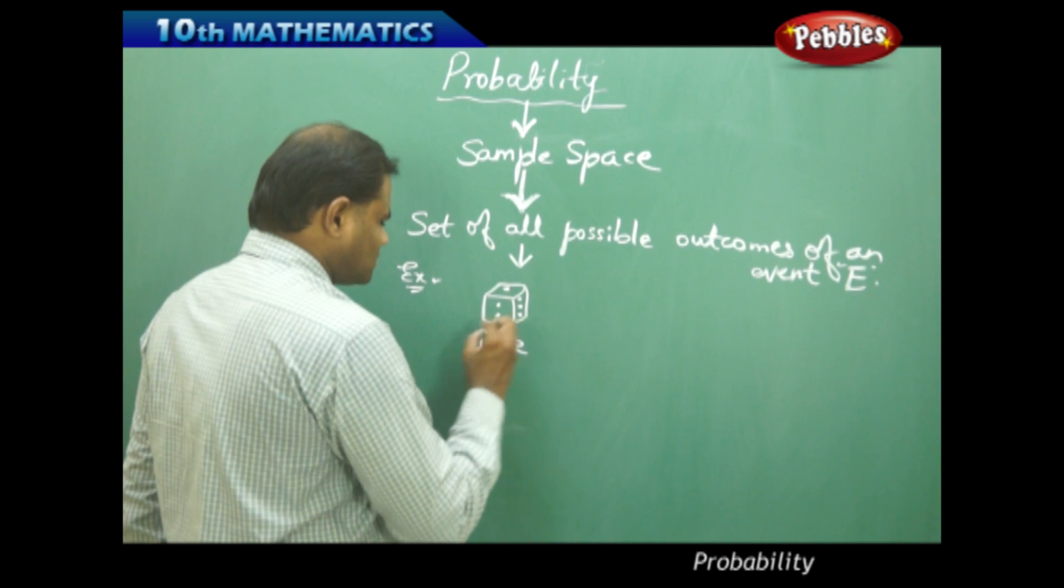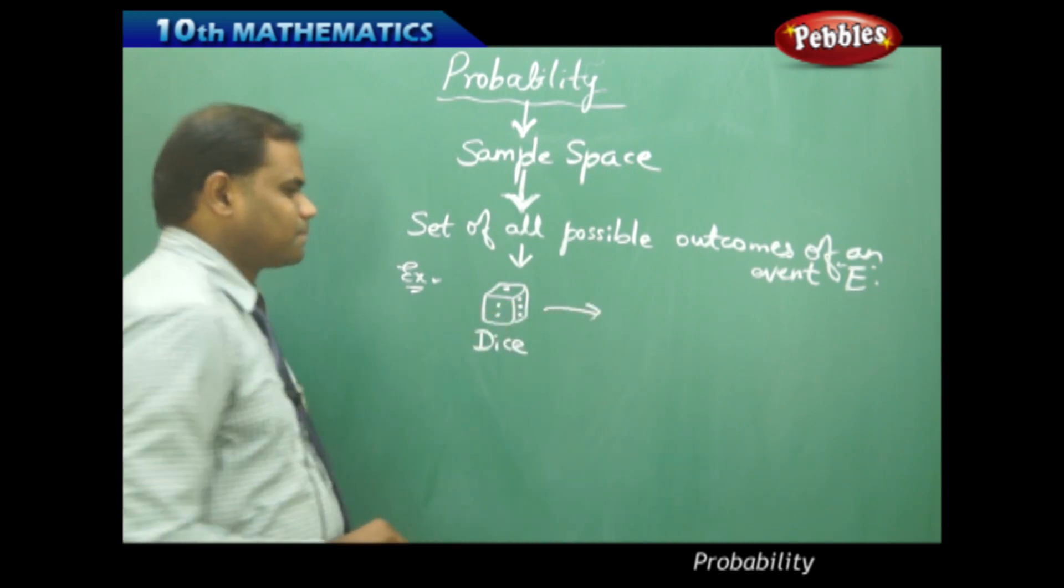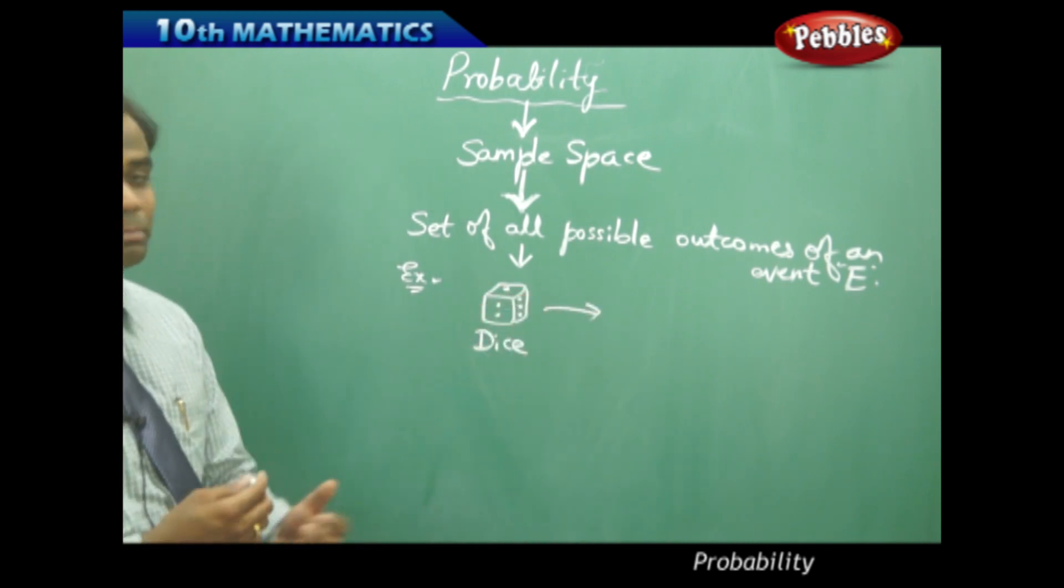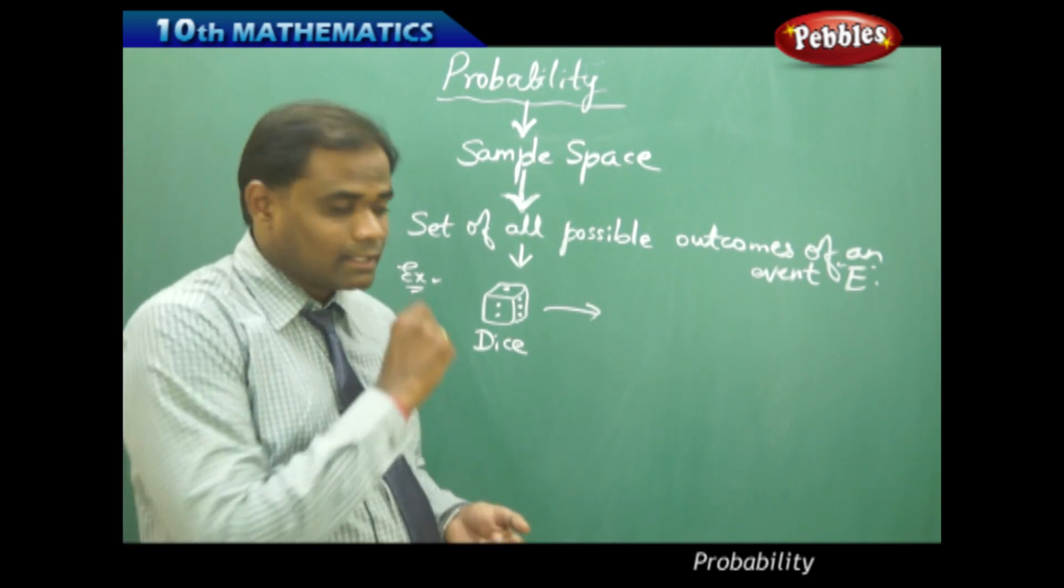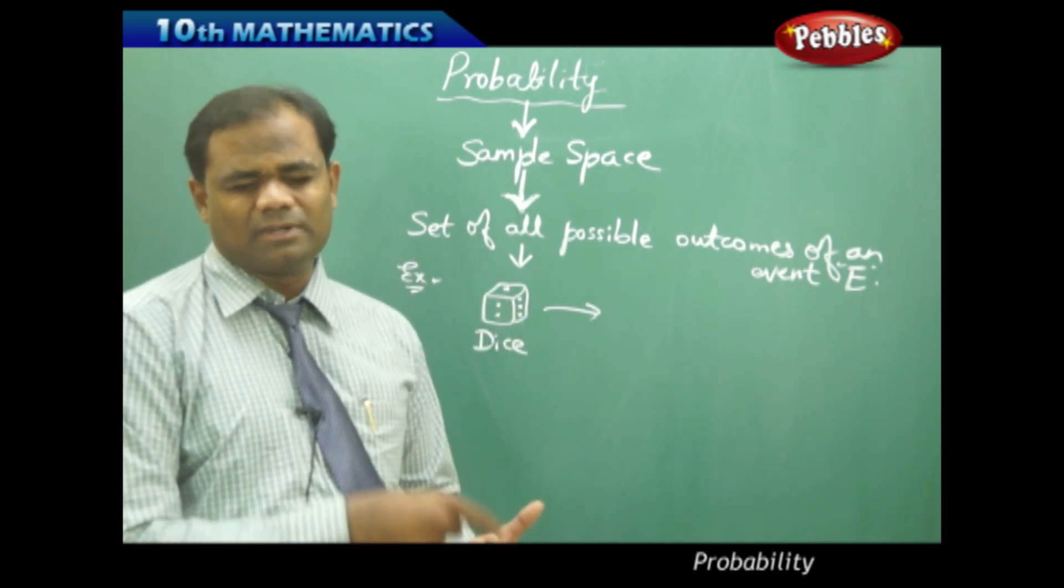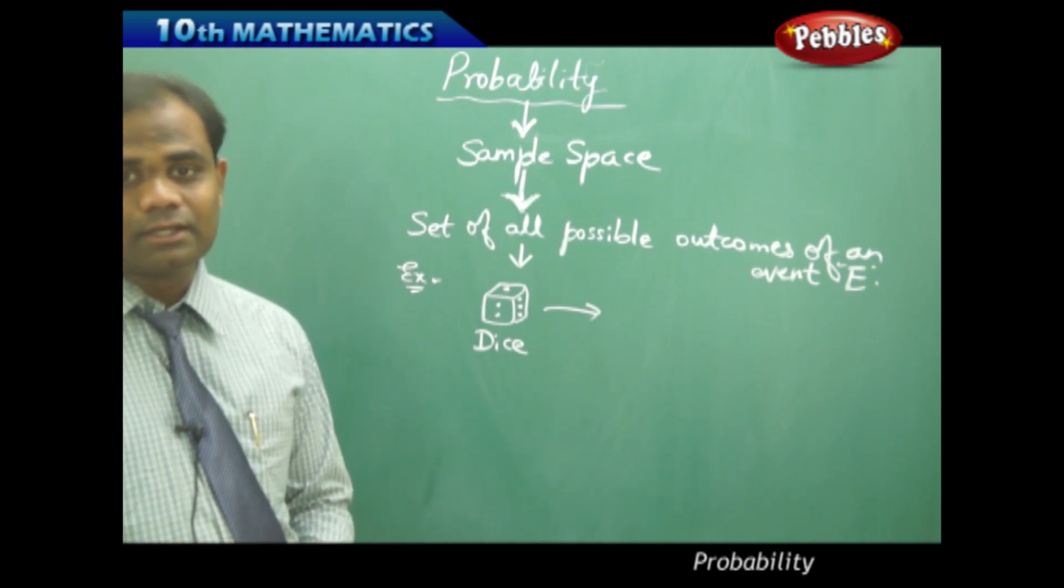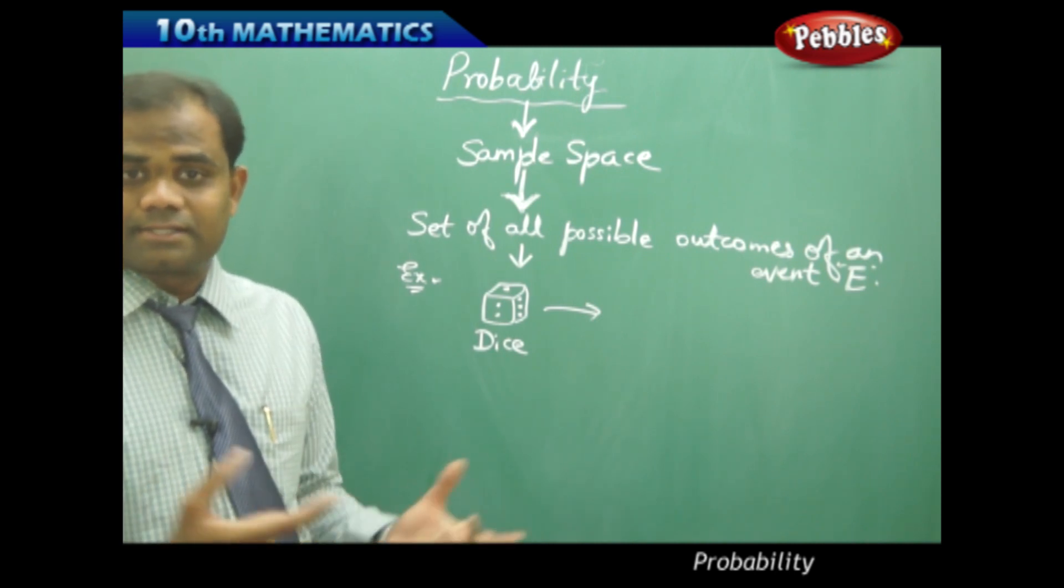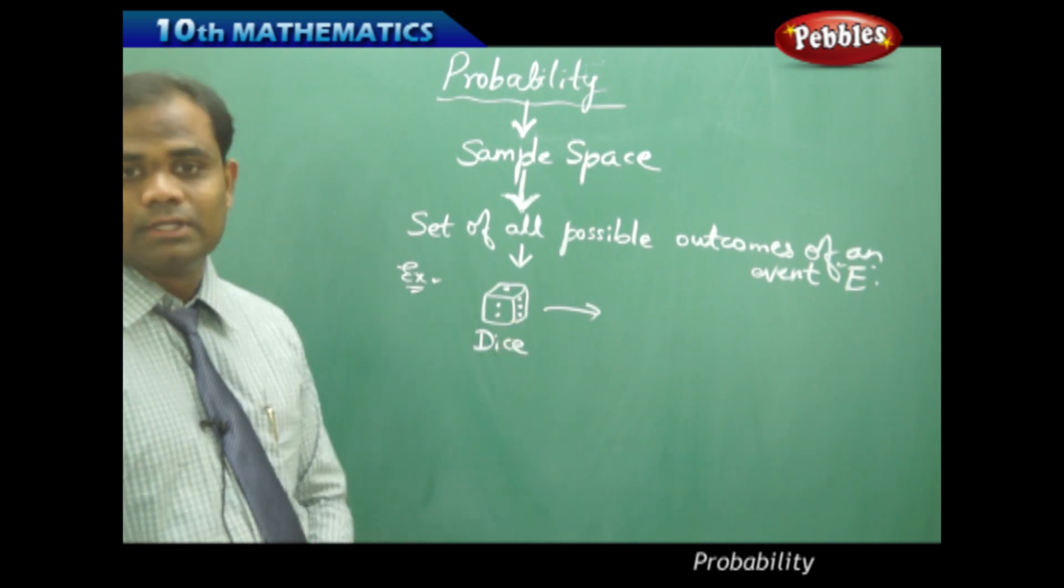I have totally the set of all possible outcomes. When I throw a die, I may get a one on the top, a two on the top, a three on the top, a four, five, six, anything on the top, but I cannot get a seven. Therefore,